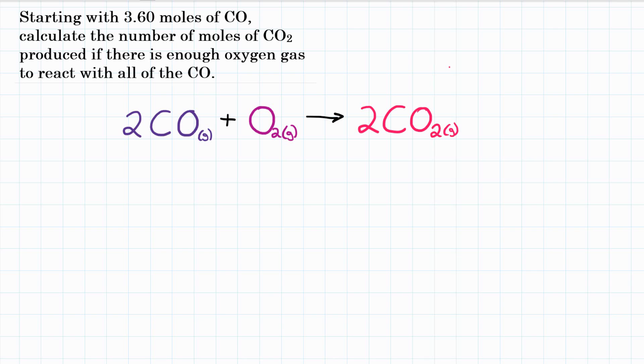So this is going to be a moles to moles stoichiometry problem. The problem says starting with 3.60 moles of CO, so that's what we're going to start with: 3.60 moles of carbon monoxide. And we want moles of CO2, so we want to end up with moles of carbon dioxide.